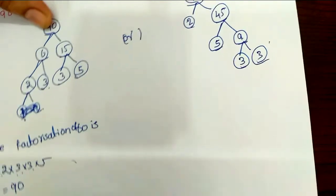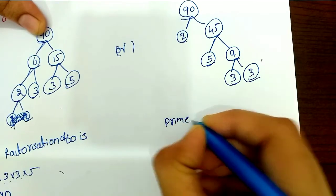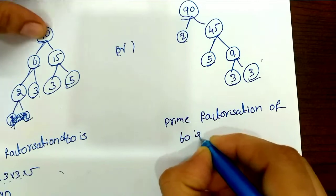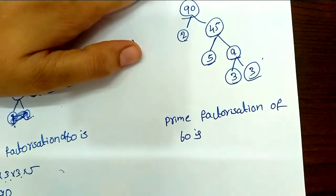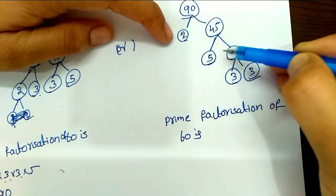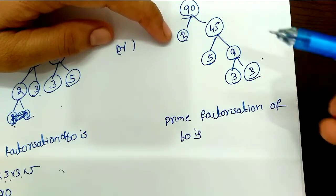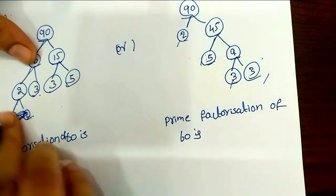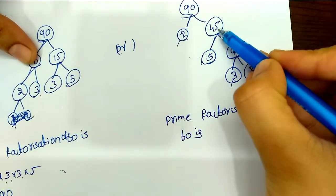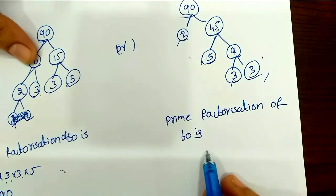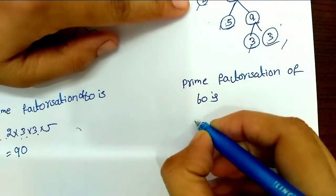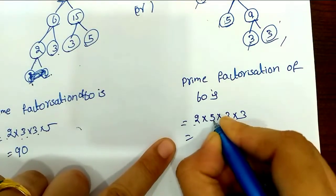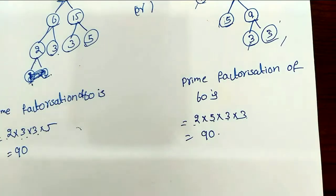To do the factorization of 90: you know 2 × 5 × 3 × 3. 2 times 5 is 10, 10 times 3 is 30, 30 times 3 is 90. 90 is 90 — that's it. Now the first problem is confirmed.